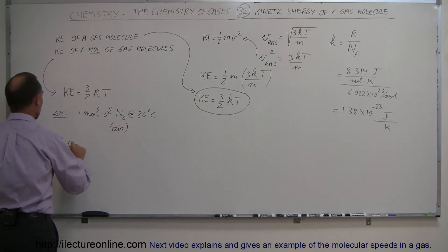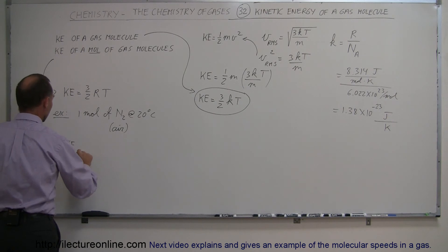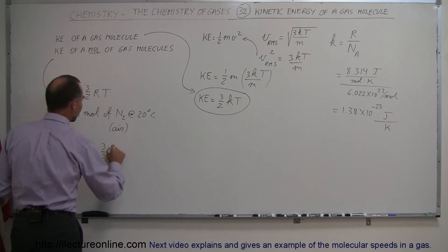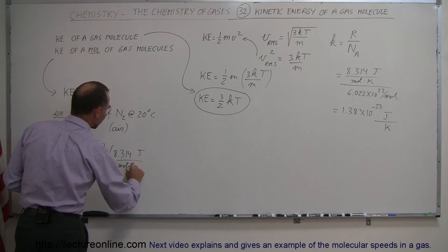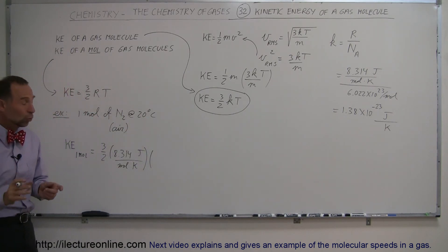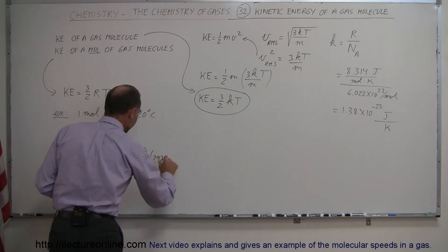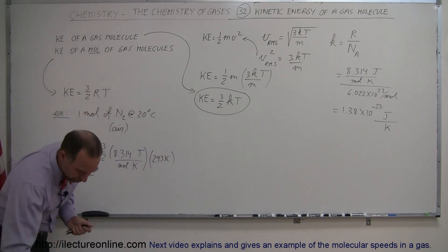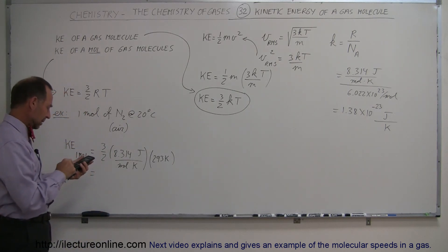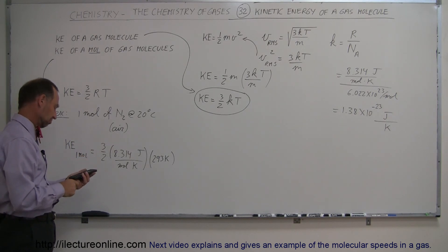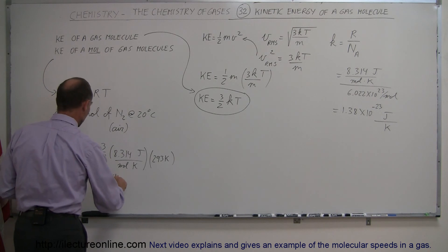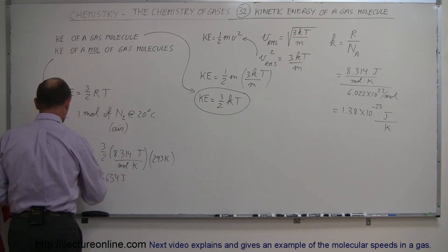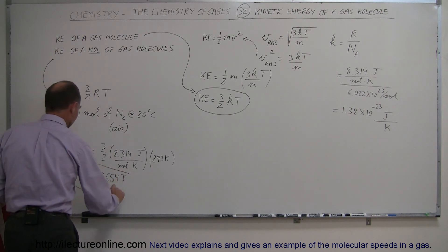Therefore, we can say that kinetic energy of one mole of air or nitrogen is equal to 3 halves times R, which is 8.314 joules per mole times Kelvin multiplied by the temperature. Well, 20 degrees centigrade is 293 Kelvin. And let's see how much that is equal to. We have 293 times 8.314 times 3 divided by 2 equals, and it's 3,654 joules. That's 3,654 joules per mole. Kinetic energy for one mole of gas at 20 degrees centigrade.